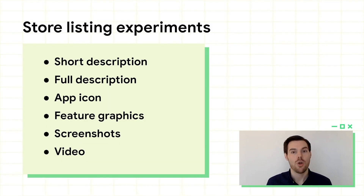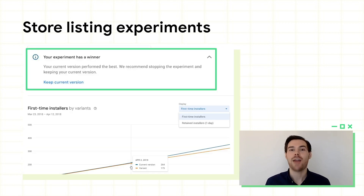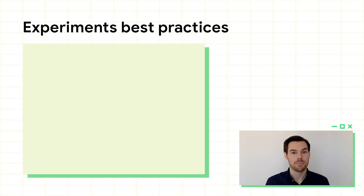When you have an idea for a change, we encourage you to start with store listing experiments. The updated step-by-step flow lets you gradually configure changes to the assets that are seen here, and only test them on a subset of users who visit your store listing. You provide the assets, and we do the analysis for you. The results are updated every few hours, and you can opt in to email notifications to be alerted when we've seen enough to recommend a winner. You can wait to apply the changes to all users until you're confident that you'll see an improvement.